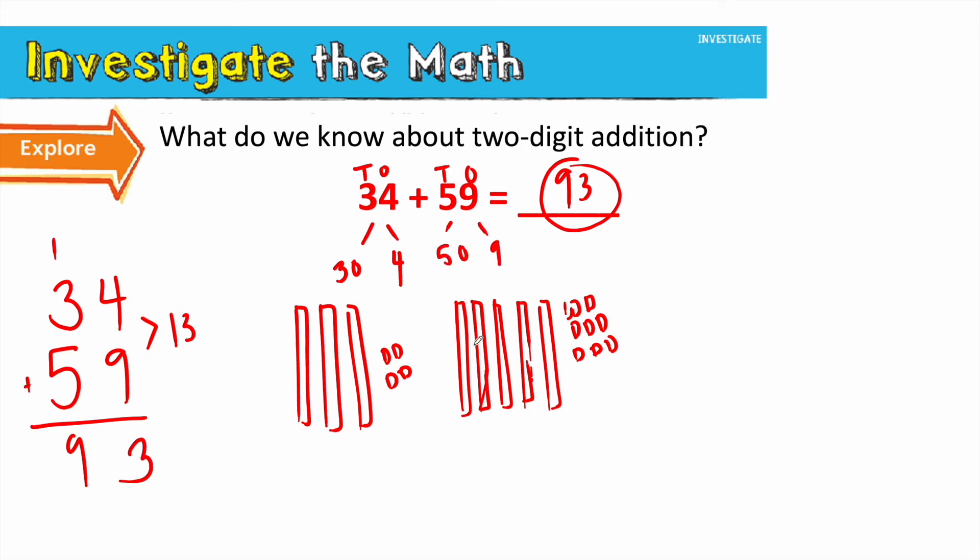Well, we know we add tens with tens and ones with ones. And here, you're going to pick these cubes up and move them together with the tens. Then you're going to pick these ones up and move them together with the ones. And when I moved my tens with my tens and my ones with my ones, let me show you what I did. I had 30 plus 50, my three tens from 34 and my five tens from 59, plus these four ones and these nine ones. Let's add 30 plus 50 plus 4 plus 9 and make sure it's still 93.